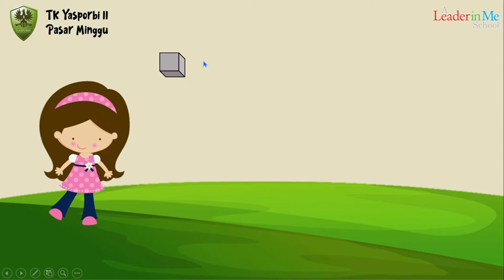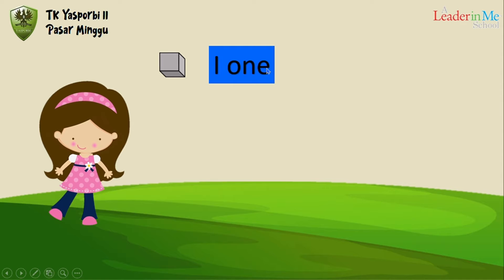How many cubes are in here? There is one cube — it means one one. Next, let's count. How many cubes? One, two — two cubes.